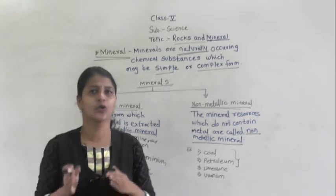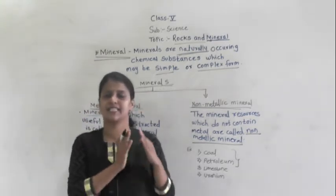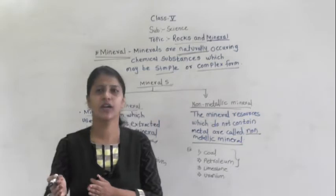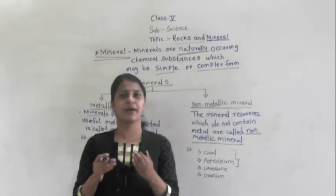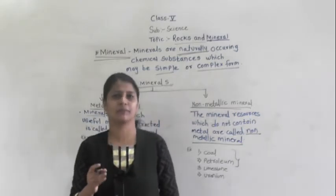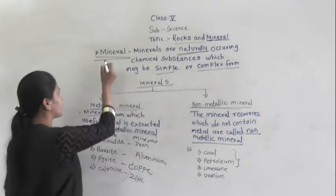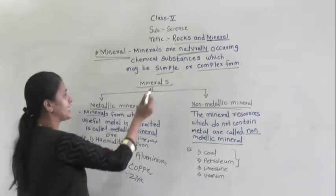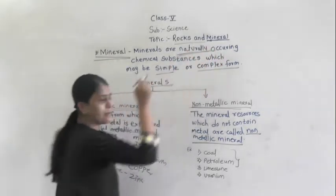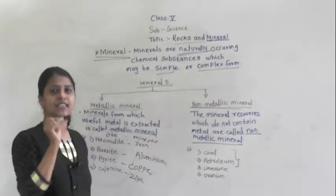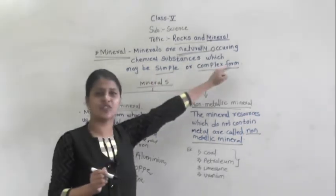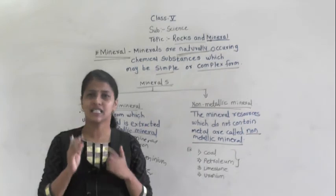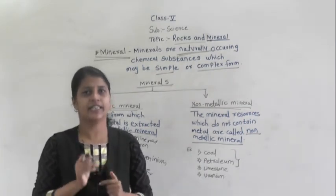You know there are mainly two types: natural and artificial. Artificial means things which are made by human beings. Now, minerals we cannot make — humans cannot make minerals — so we get them only from nature. That is why they are called naturally occurring chemical substances.